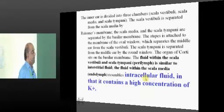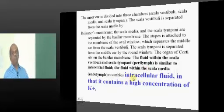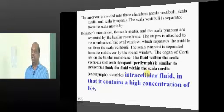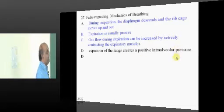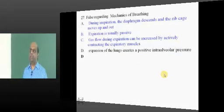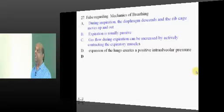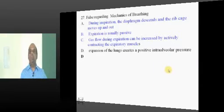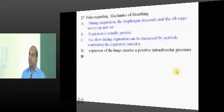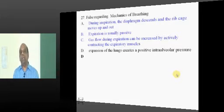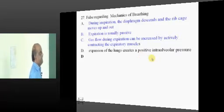Whereas the perilymph is very similar to interstitial fluid is what you have to ultimately remember. Whenever the lungs expand, they lead to a negative intra-alveolar pressure. Sub-atmospheric intra-alveolar pressure is the one which is basically generated.